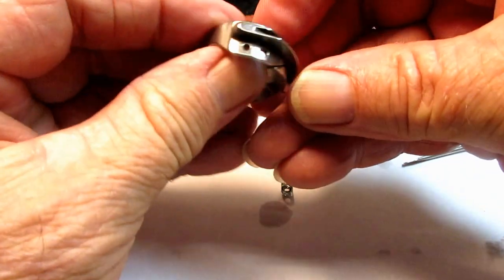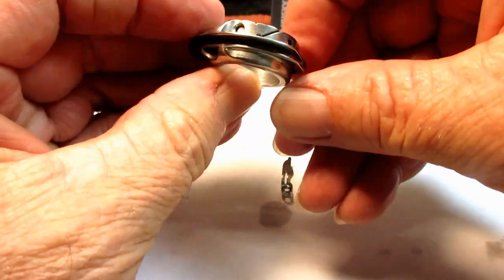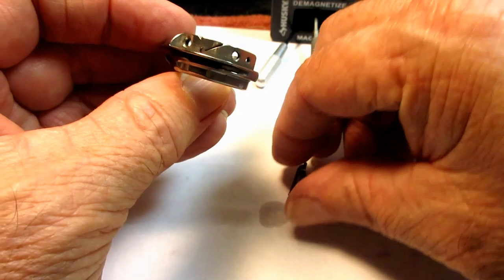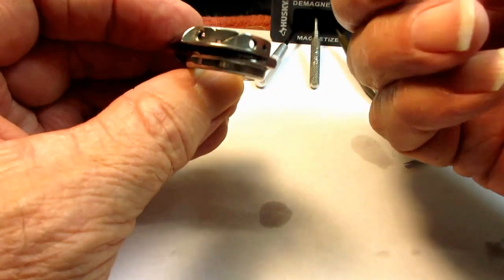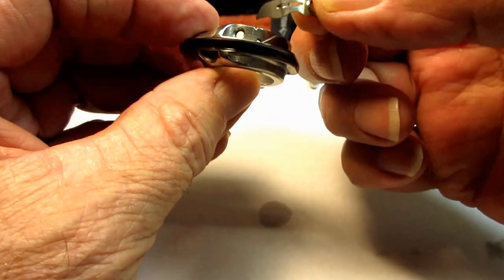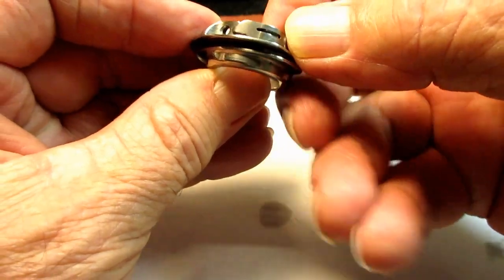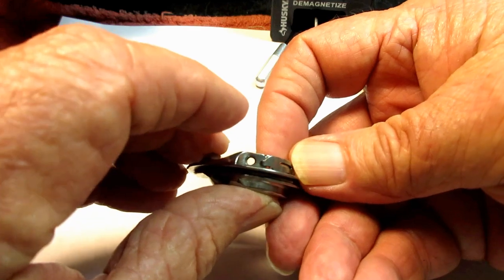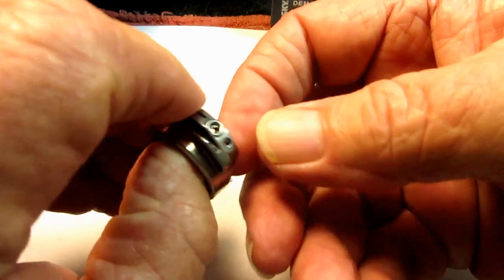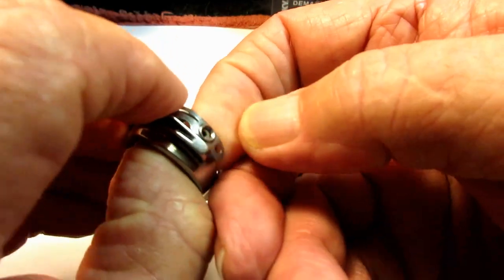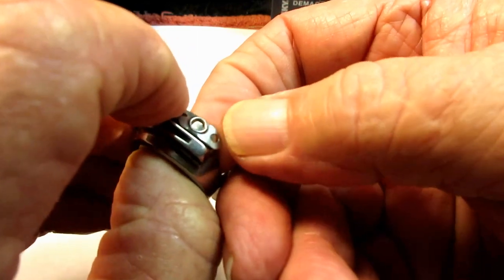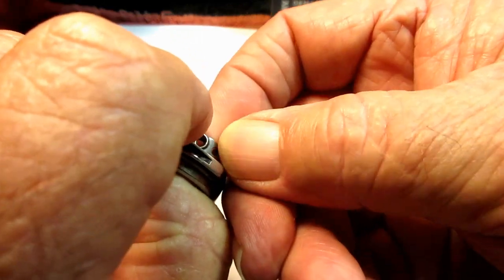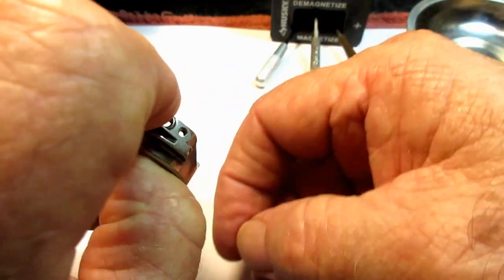So, okay. Then it's very easy to reassemble this. Once you have it clean and dry. And, we're going to put that spring back in with a little hook in that hole. And, in the hole. And then, when you do that, hopefully your two screw holes will line up.